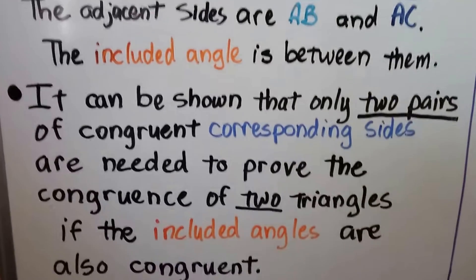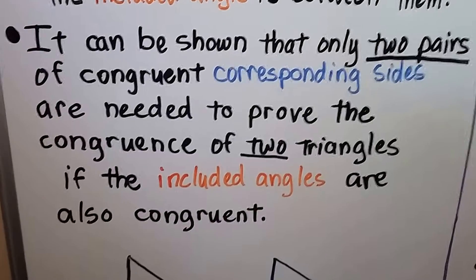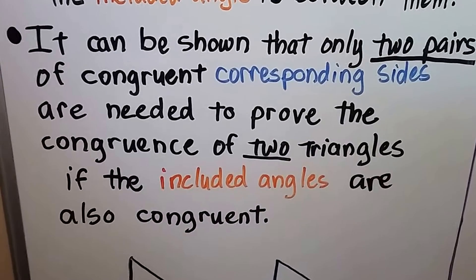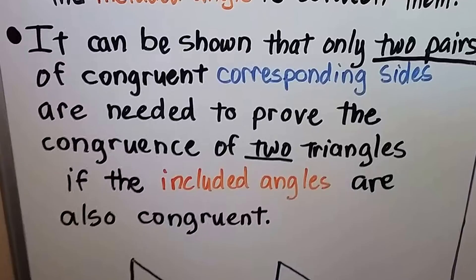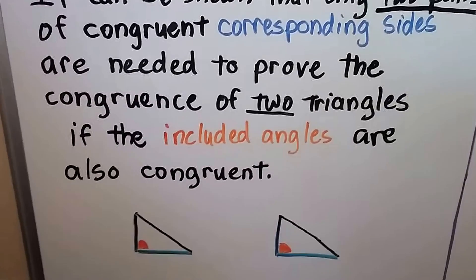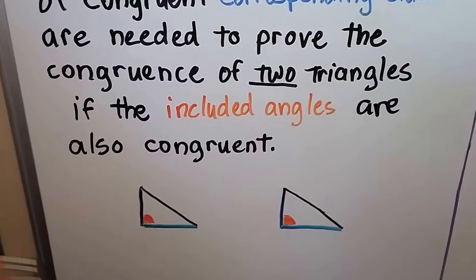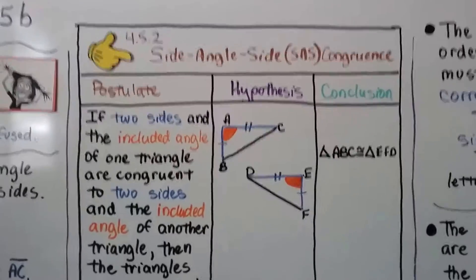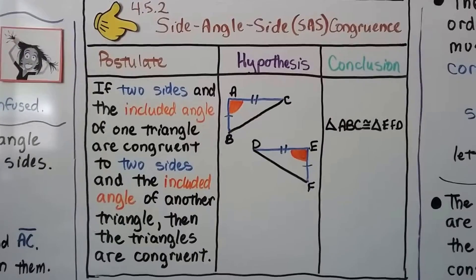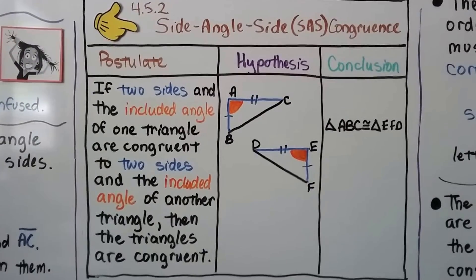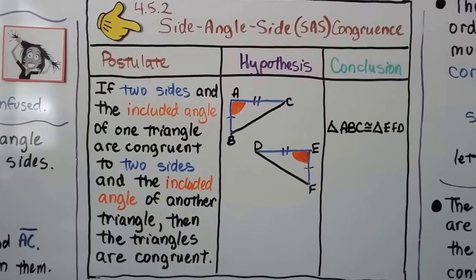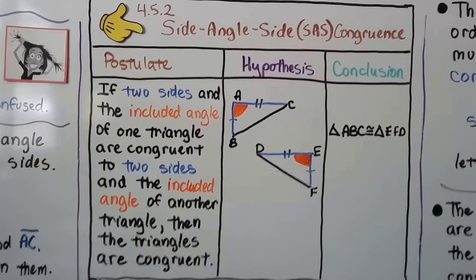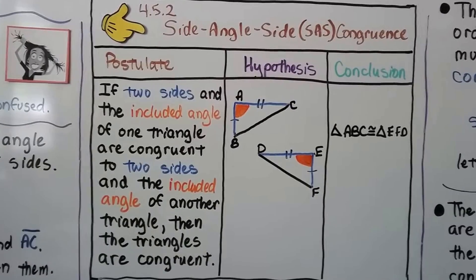It can be shown that only two pairs of congruent corresponding sides are needed to prove the congruence of two triangles if the included angles are also congruent. That brings us to the side angle side SAS congruence postulate, which says if two sides and the included angle of one triangle are congruent to two sides and the included angle of another triangle, then the triangles are congruent.